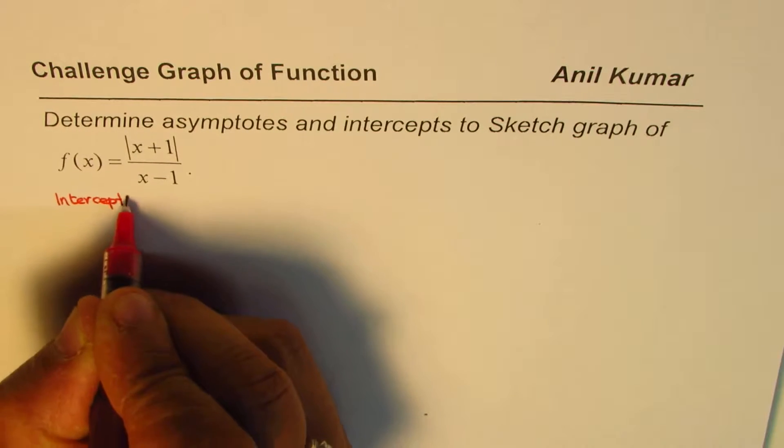Now let's find the y-intercept. The y-intercept is a point where x equals 0. So f(0) equals the absolute value of 0 plus 1 divided by 0 minus 1, which is 1 divided by minus 1, which equals minus 1. So the y-intercept is minus 1.